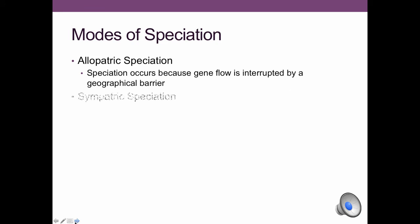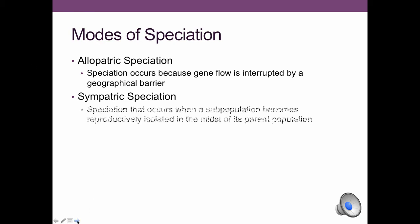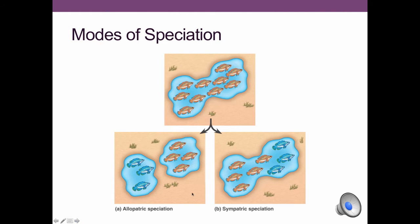There are two different modes of speciation: allopatric and sympatric. Allopatric speciation involves a geographical barrier, whereas sympatric speciation does not. By far, allopatric speciation is the most common, as illustrated here.